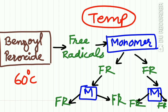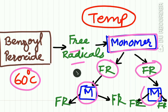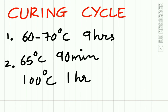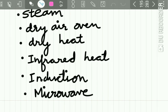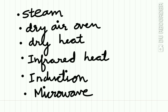In the polymerization of heat activated denture base resins, when temperature exceeds 60°C, benzoyl peroxide releases free radicals that react with the monomer; the monomer releases more free radicals that react with other monomer molecules, forming more free radicals in a continuing chain reaction. The curing cycle for injection molding is 60–70°C for 9 hours, or 65°C for 90 minutes then 100°C for 1 hour. Other methods of supplying heat include steam, dry air oven, dry heat, infrared heat, induction, and microwave.